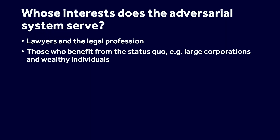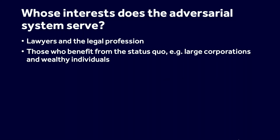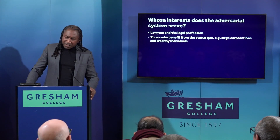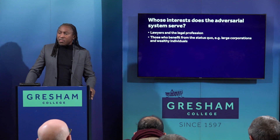So, given the flaws, whose interests does the adversarial system serve? Critics argue that the adversarial system primarily serves the interests of lawyers and the legal profession rather than the interests of justice or the wider community. In an adversarial system, lawyers are often able to charge high fees for their services, which can make the legal system prohibitively expensive for many people. This can result in situations where justice is not available to all, but only to those who can afford it.